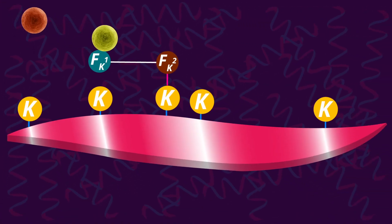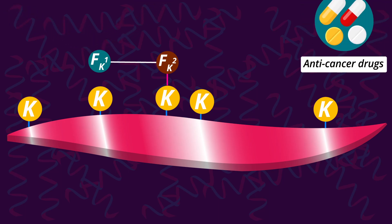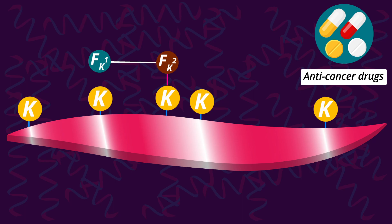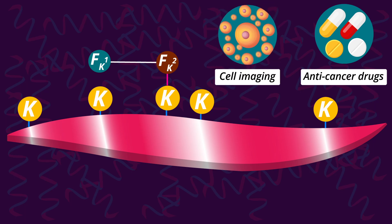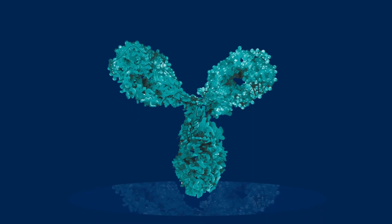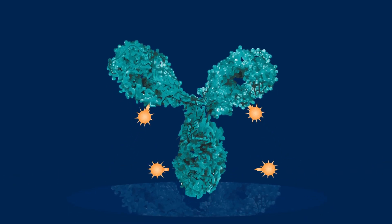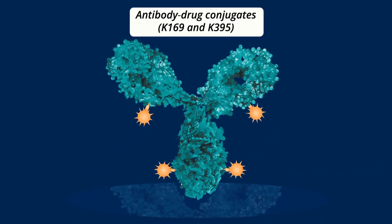The resin segment can then be easily replaced by a functional group or probe, for example, anti-cancer drugs for targeted therapy or fluorophores for cell imaging. This platform was also used to produce homogeneous antibody drug conjugates, or ADCs,